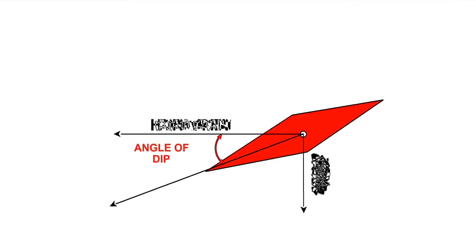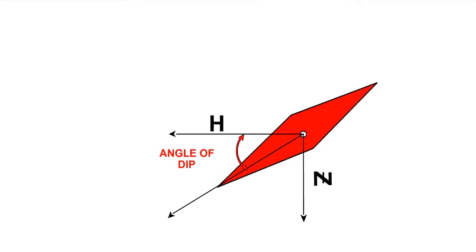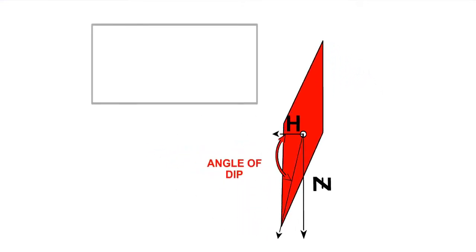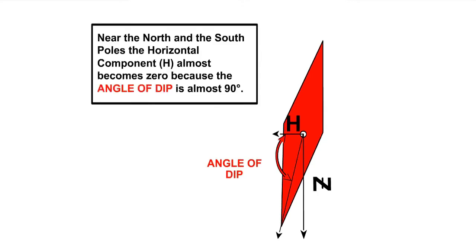The angle that the magnetic lines of force make to the horizontal is referred to as the angle of dip. This angle will be maximum at the magnetic poles and reduce as we move away from the poles.